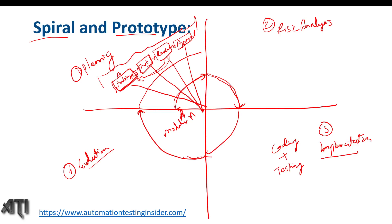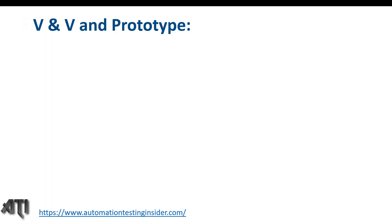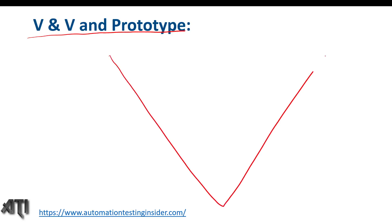Now let's talk about the next example: V&V and prototype — how it happens in V&V when we combine V&V model with prototype. So I need to draw the V model shape: this side is the developer side and this is the testing side — or you can say this is the Software Development Life Cycle (SDLC) and this is STLC. If you haven't watched V&V model, then please go and watch it and then come back to this video.